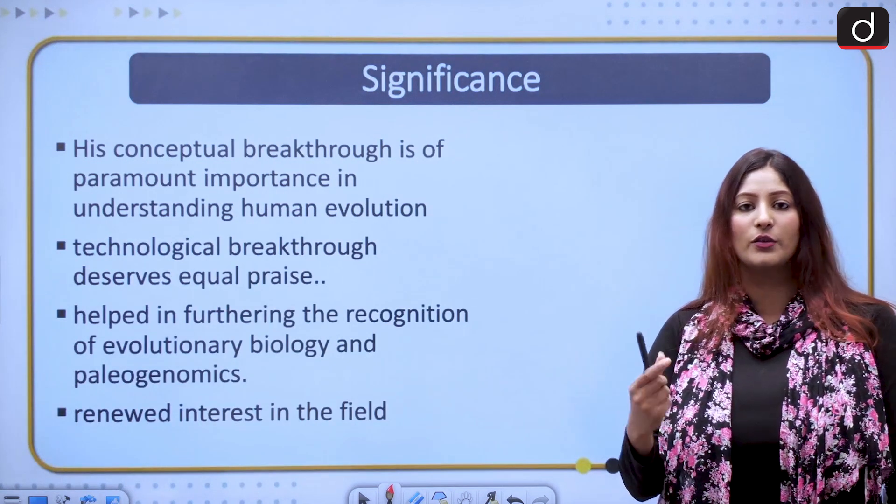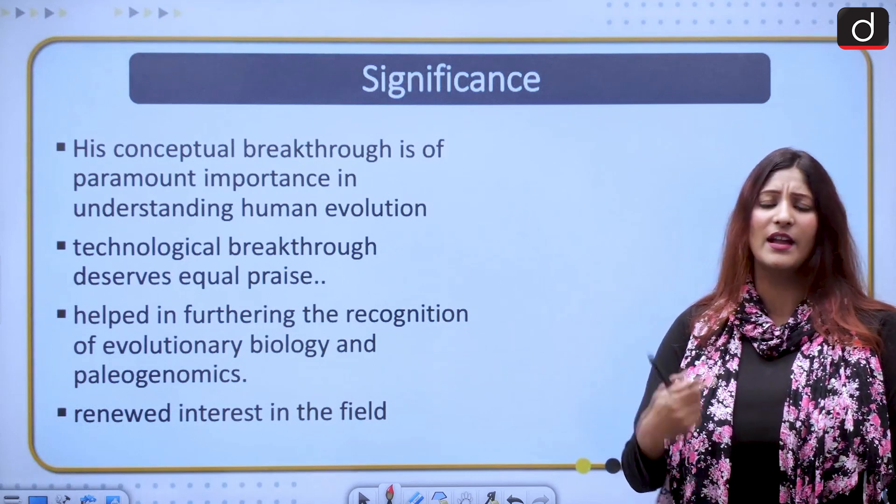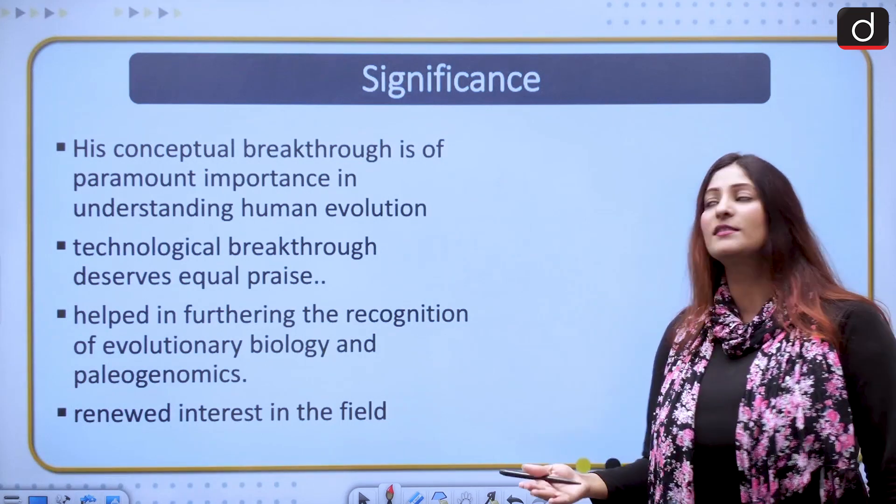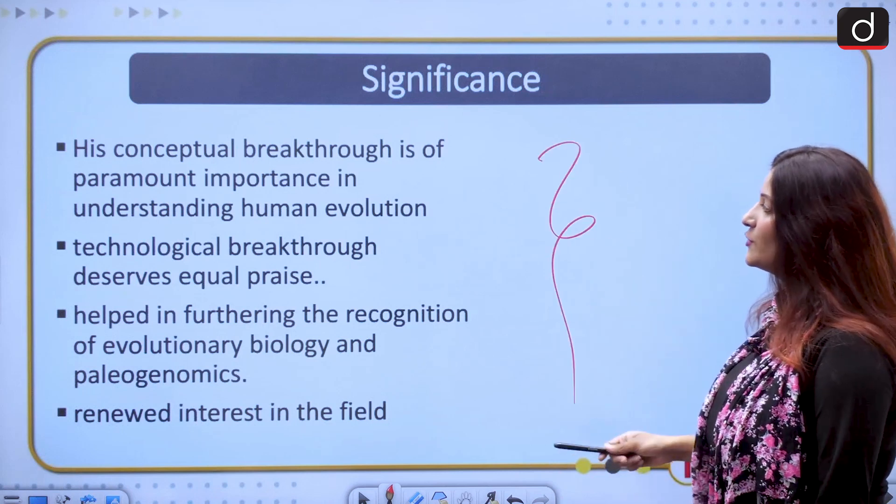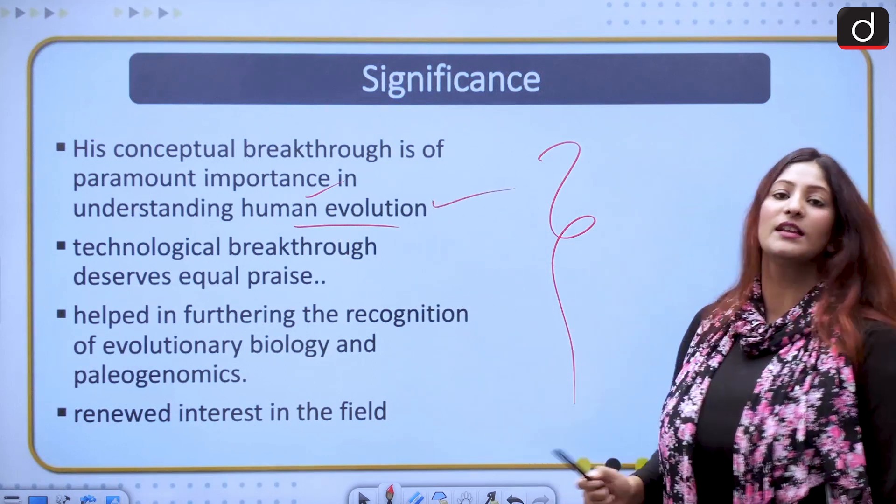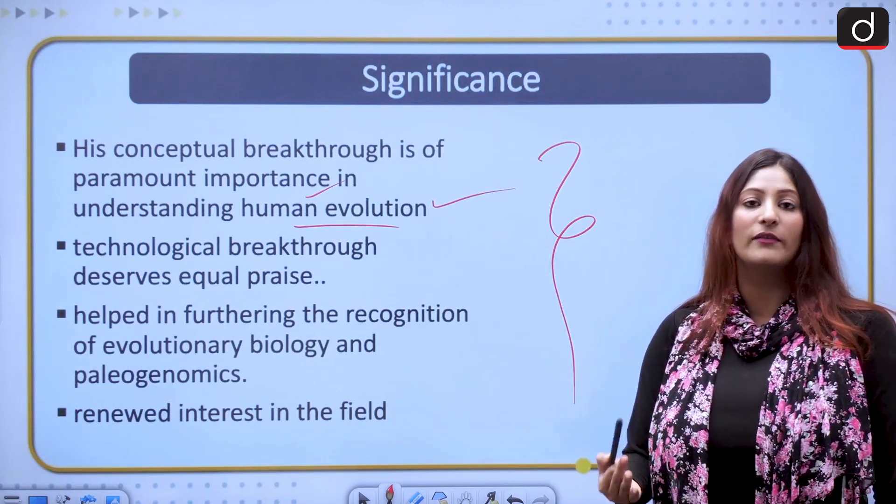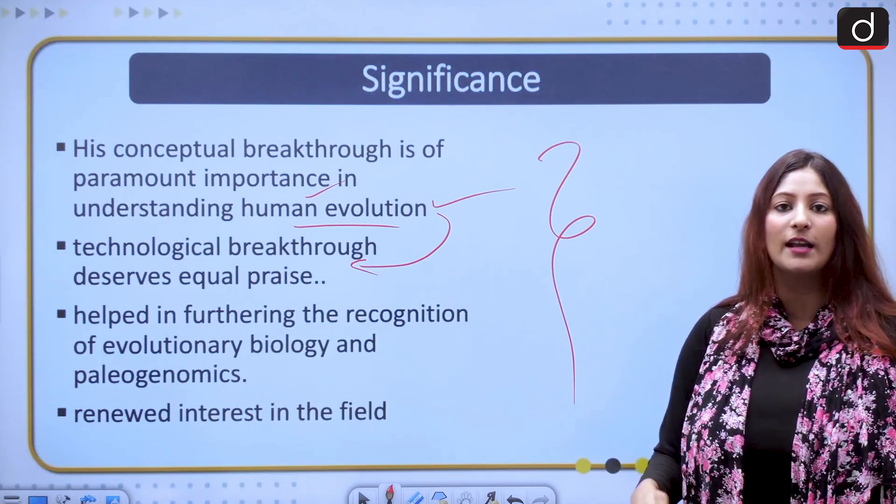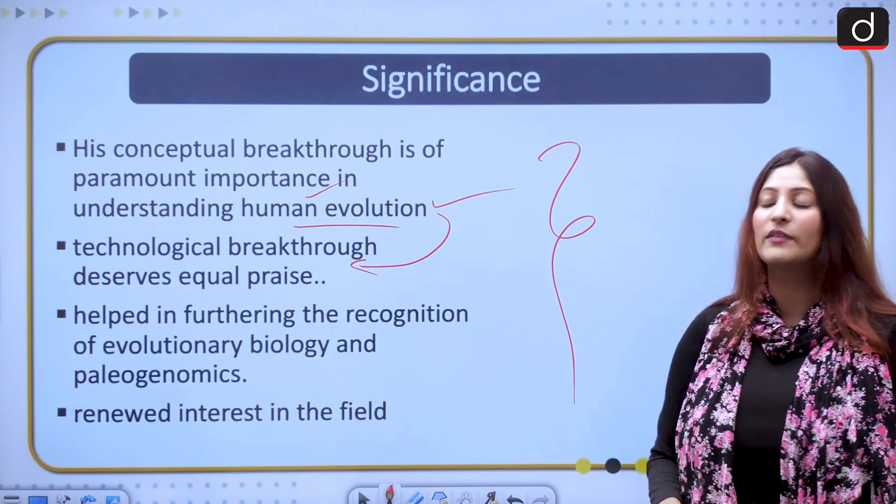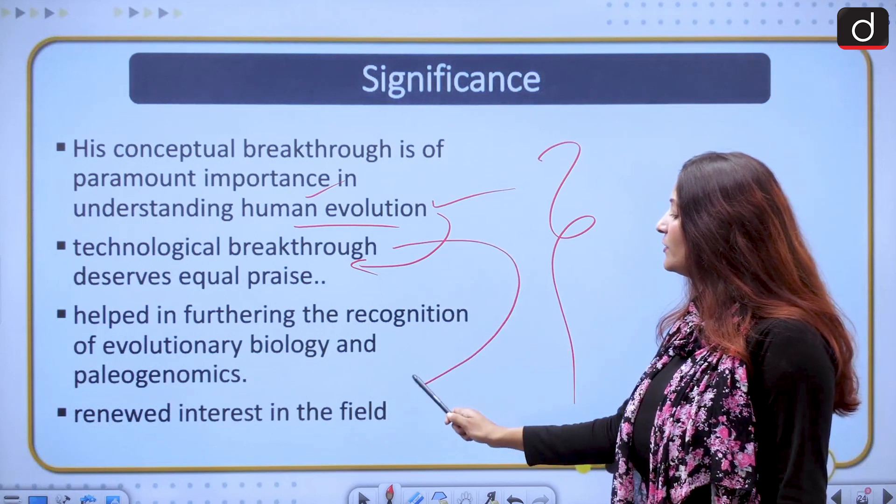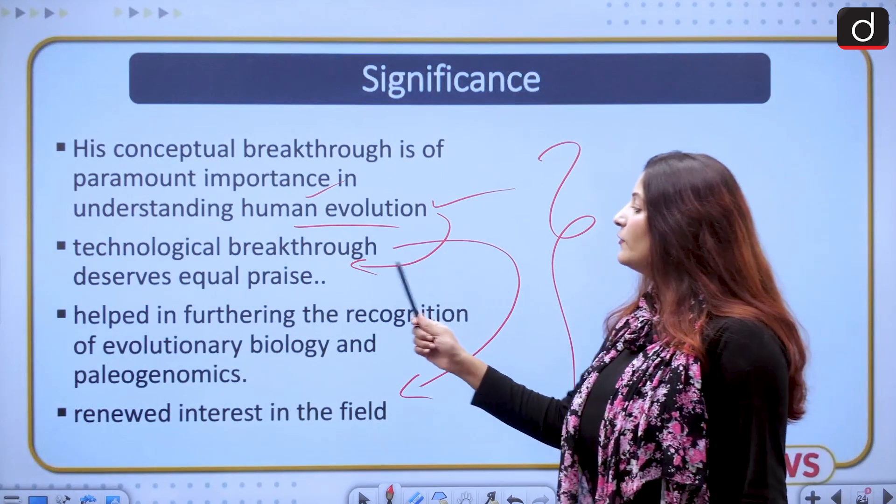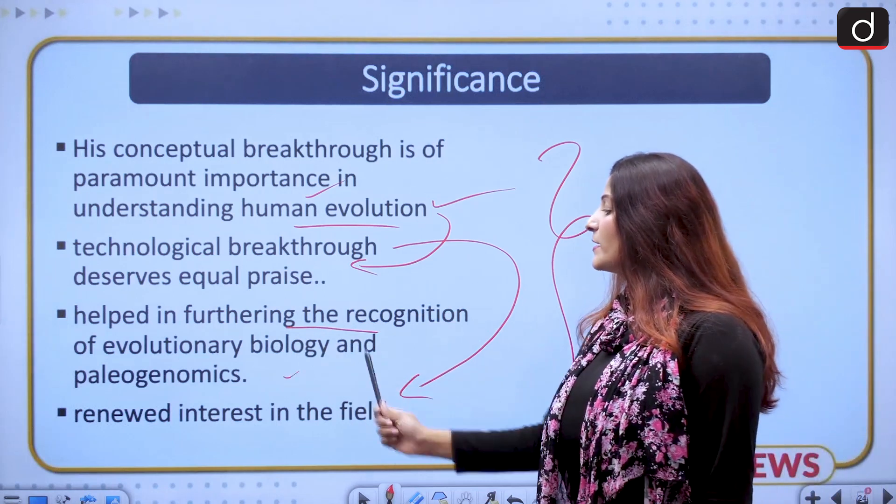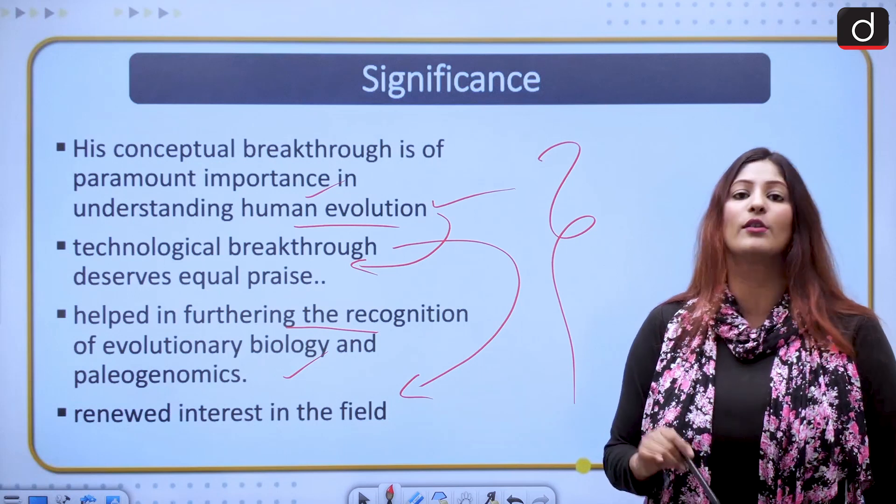Significance. To understand how infections were, we have learned from Neanderthals the immune response. Denisovan's genetics are present in Tibetans. The conceptual breakthrough is of paramount importance in understanding human evolution. How can we evolve in the field of biology and medicine as well? It is also the technology that has been used in the entire process. This would give it a renewed interest in the field and a new field has evolved. It will help in furthering the recognition of evolutionary biology and paleogenomics.